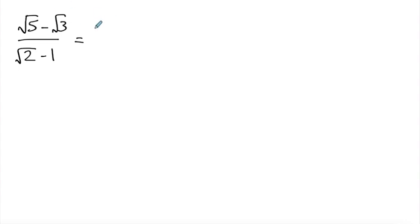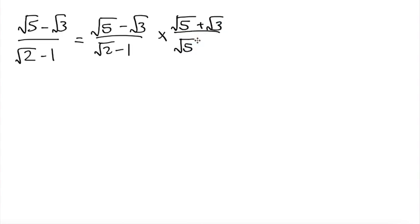So we're going to write that equivalent expression of root 5 minus root 3 over root 2 minus 1. This time we're going to multiply by the conjugate of the numerator, which will be root 5 plus root 3 over root 5 plus root 3.